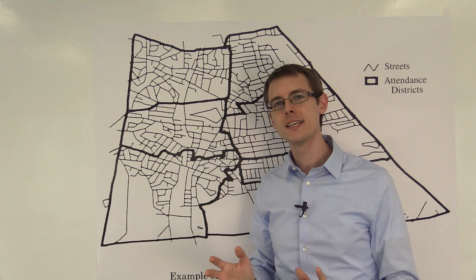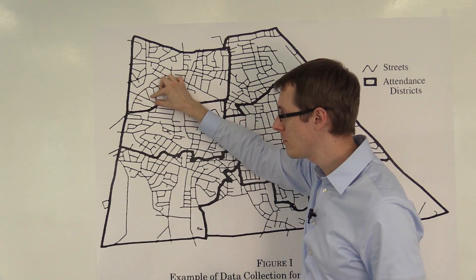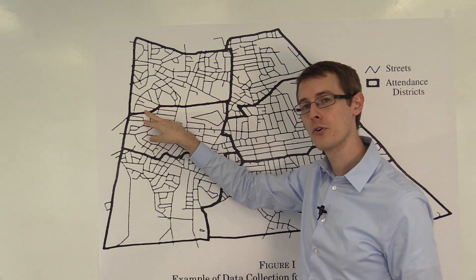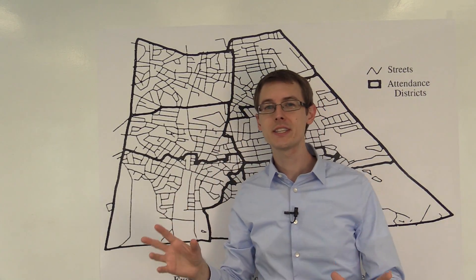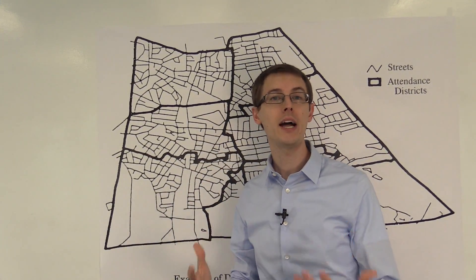So RDD analysis looks very similar to a randomized experiment. We've got our treatment group, these houses, and our control group, these houses. So just like in randomized experiments and natural experiments, we can do a balance check.